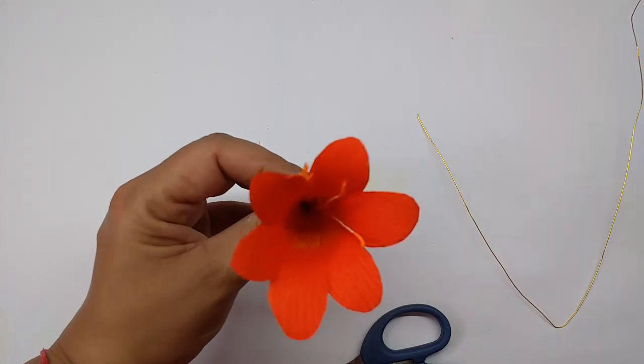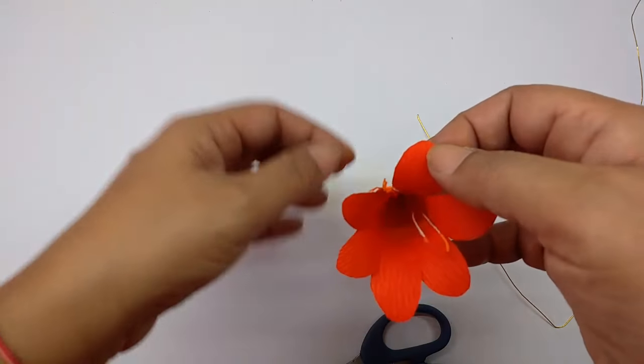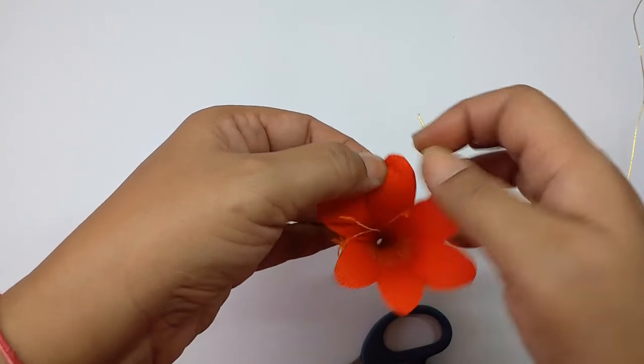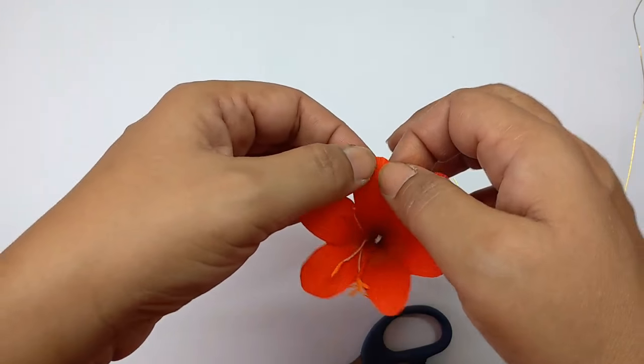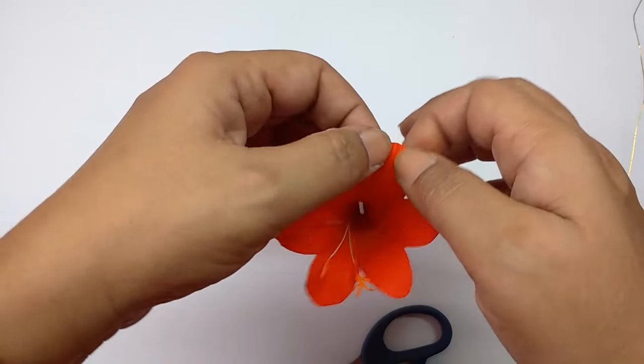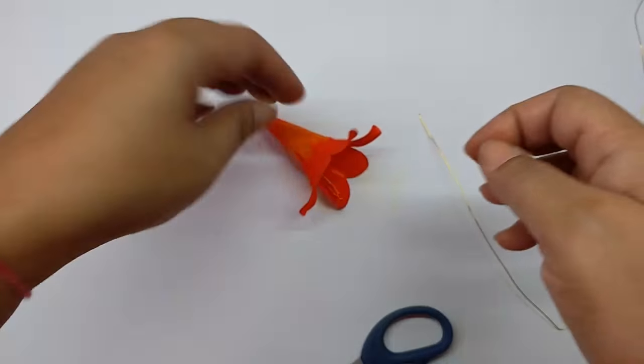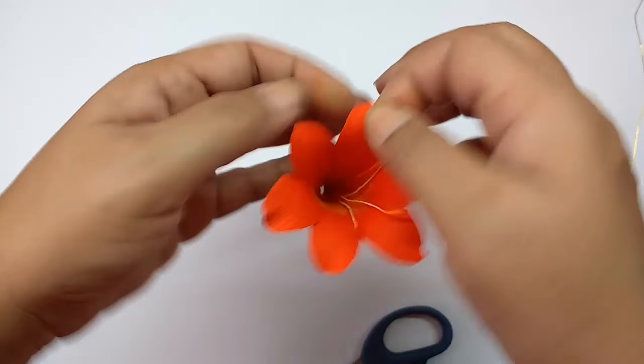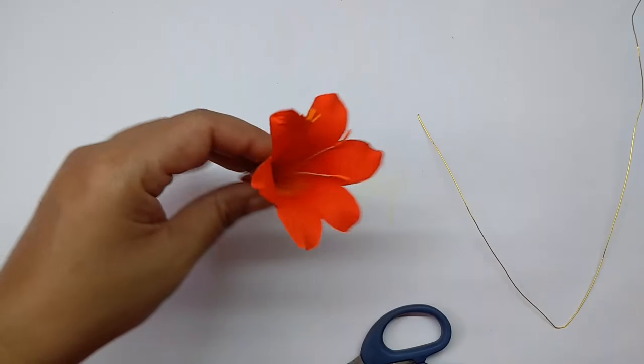This is how it looks. Now just give a few crimps on each petal, just a few, maybe a little twist or just stretch a bit. Like this.